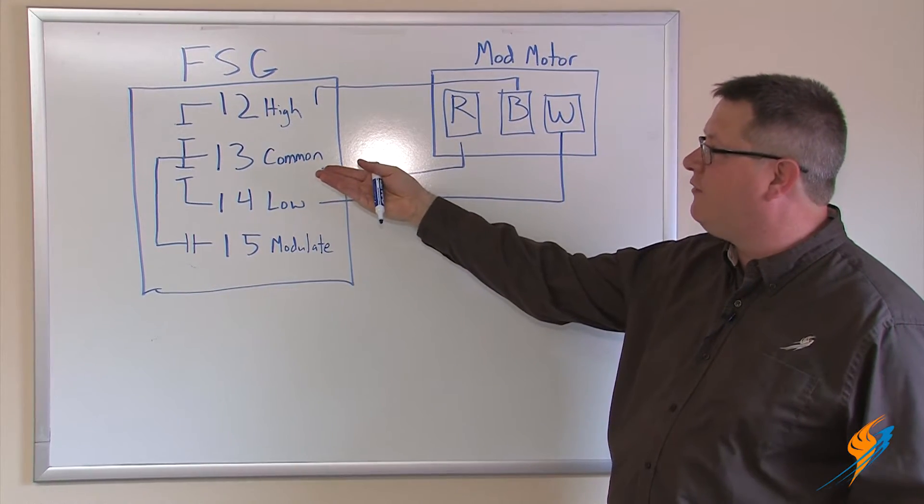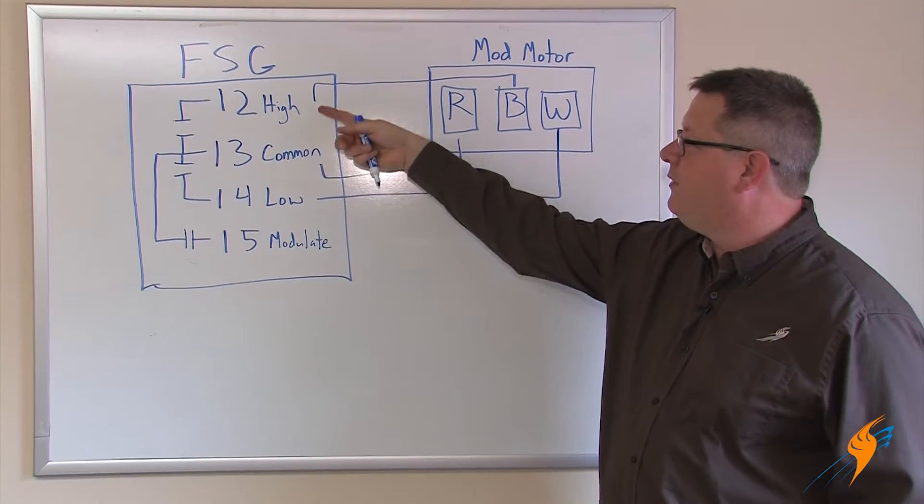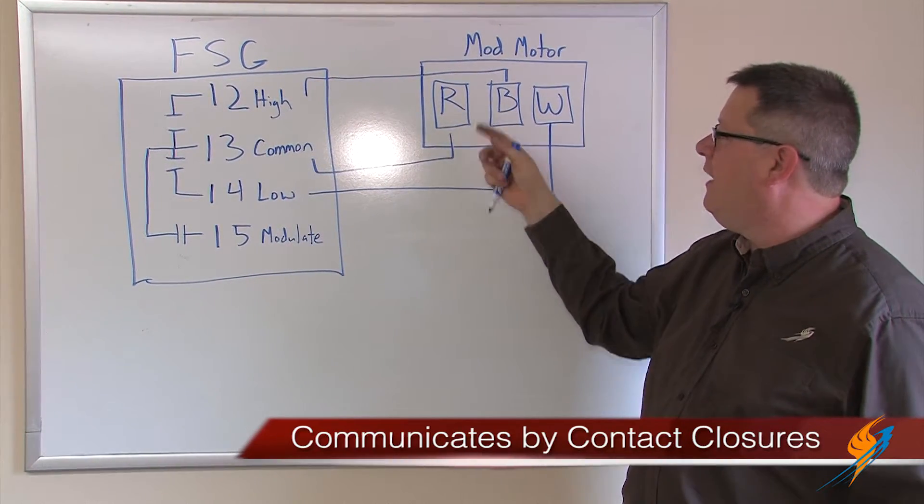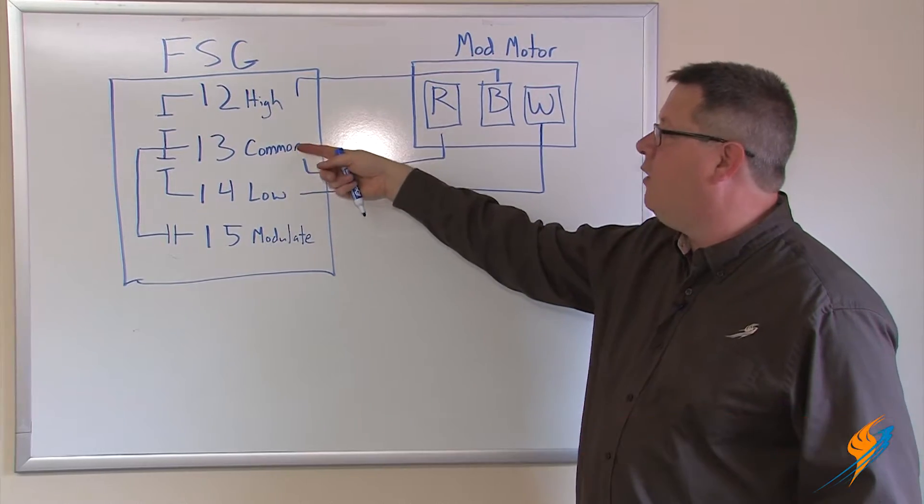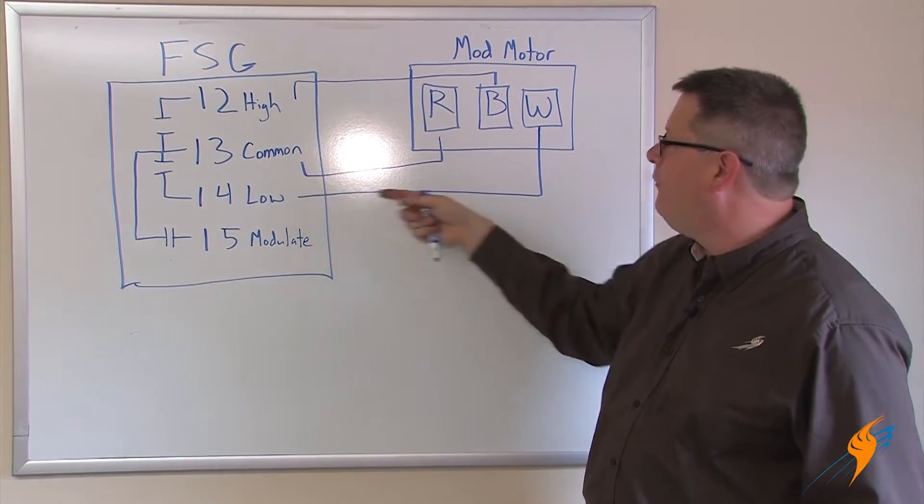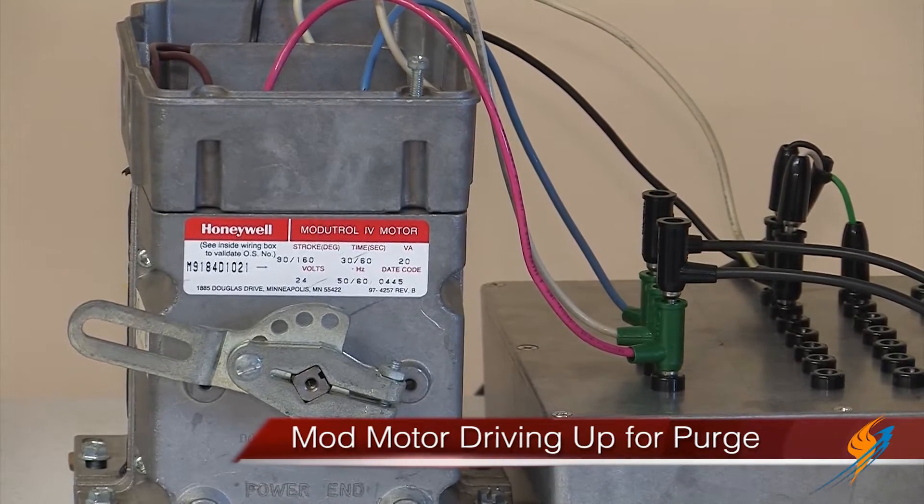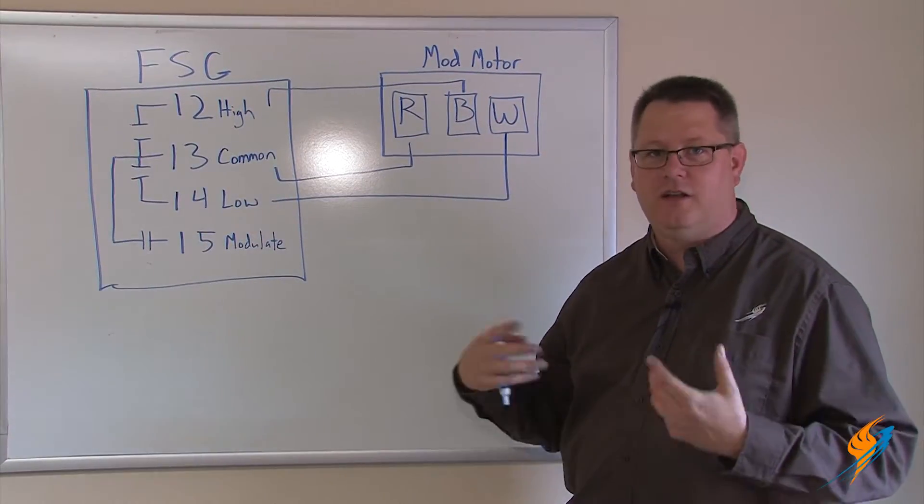So when the flame safeguard calls for purge, it simply jumps or closes this contact to drive the motor to the high fire position. It does the same thing for low, jumping the common to the low fire position. This causes the mod motor to drive up for purge and back down for light off, as we need for a safe cycle.